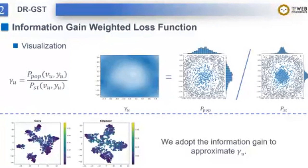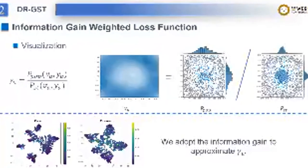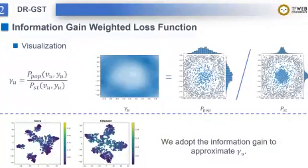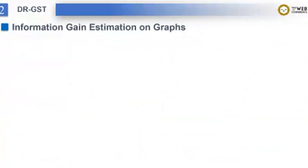Clearly, we find it's just the same change trend of the information gain. Therefore, we adopt the information gain to approximate gamma_u. So, how to calculate such an important information gain?